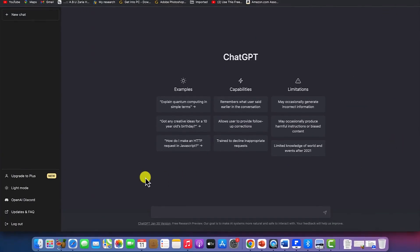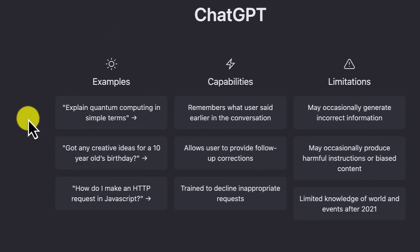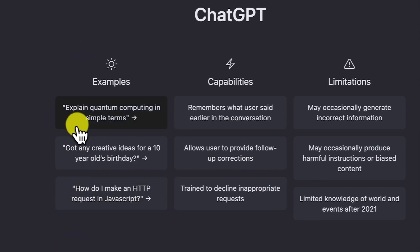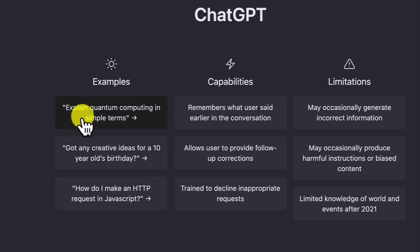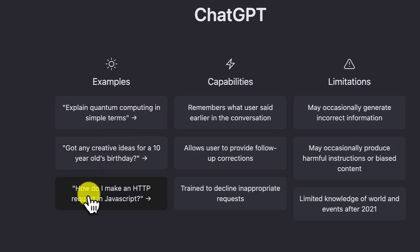The ChatGPT details section tells you a lot about the platform. It highlights that ChatGPT is all about interaction, forming prompts, and discussing with the AI directly. You can see sample questions like 'Explain quantum computing in simple terms,' and once you click on one it will give you a series of details. Then you have a capabilities section talking about what ChatGPT can do for you.